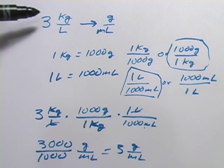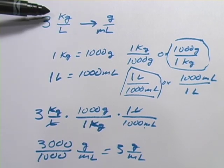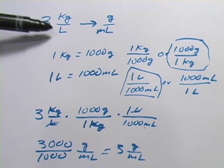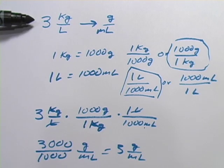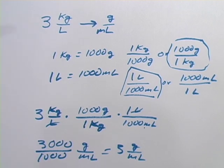which seems kind of funny because we started with three kilograms per liter. But it really makes sense because there's a thousand grams in a kilogram and a thousand milliliters in a liter. So it's going to have the same number of kilograms per liter as grams per milliliter. So KC123960, I hope that helped.